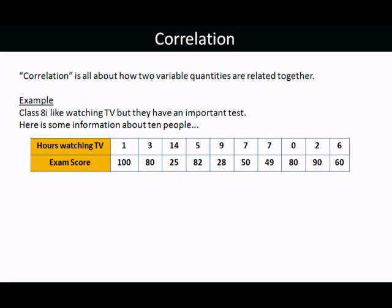It's hours watching TV and exam score. There's 10 people and two pieces of information about each person. For example, there's a person who spent five hours watching TV and got an exam score of 82. Each column in that table is two pieces of information, hours watching TV and exam score for a person. And there's 10 people overall.